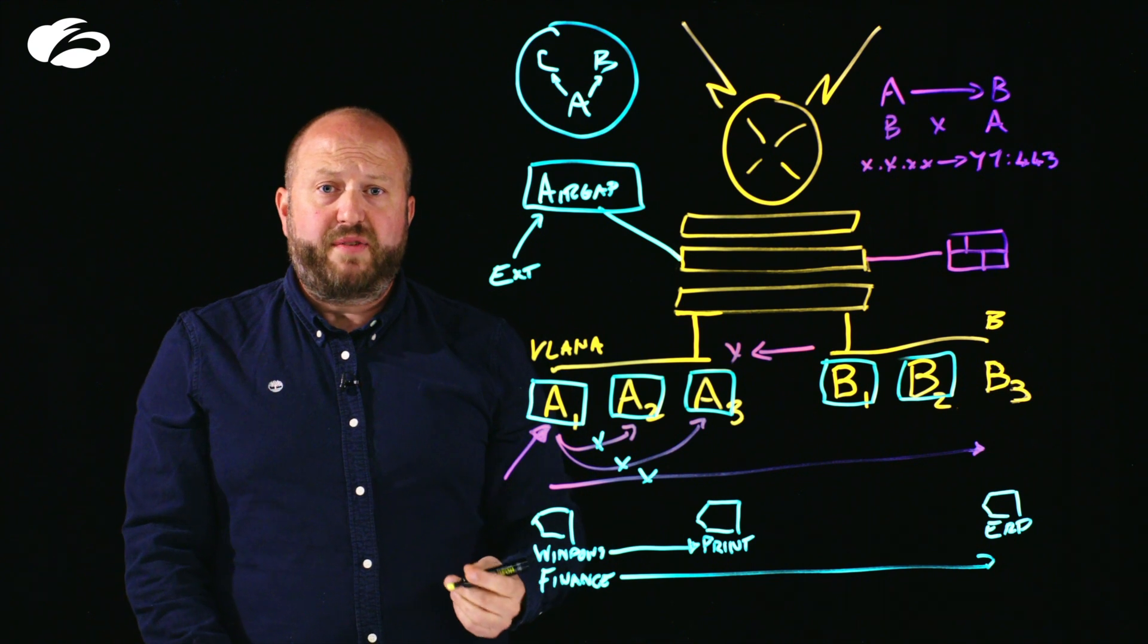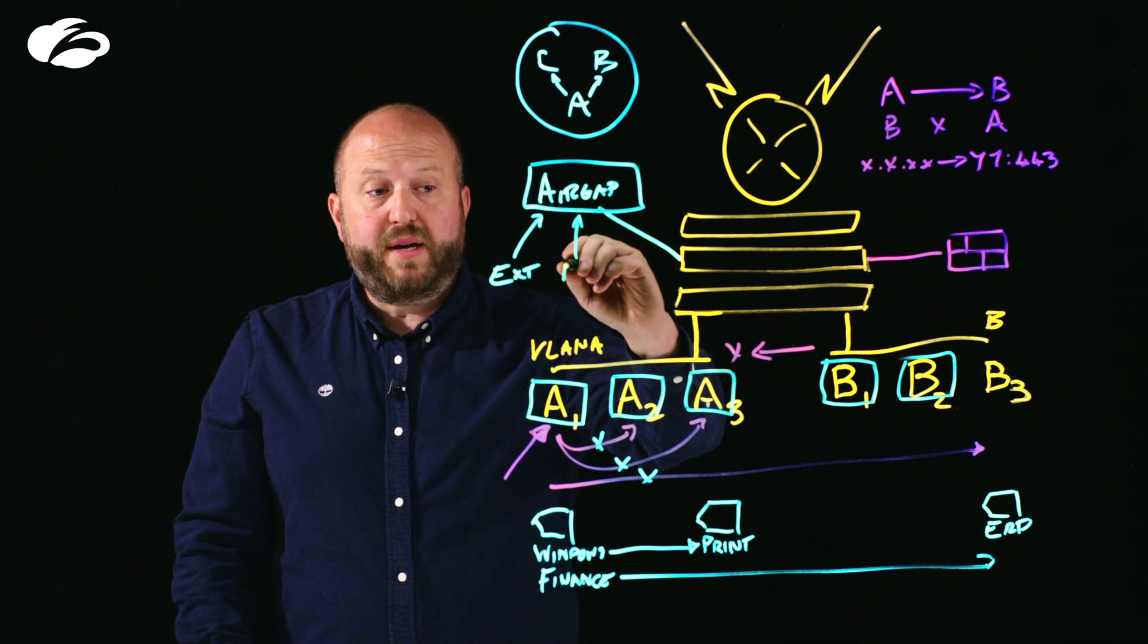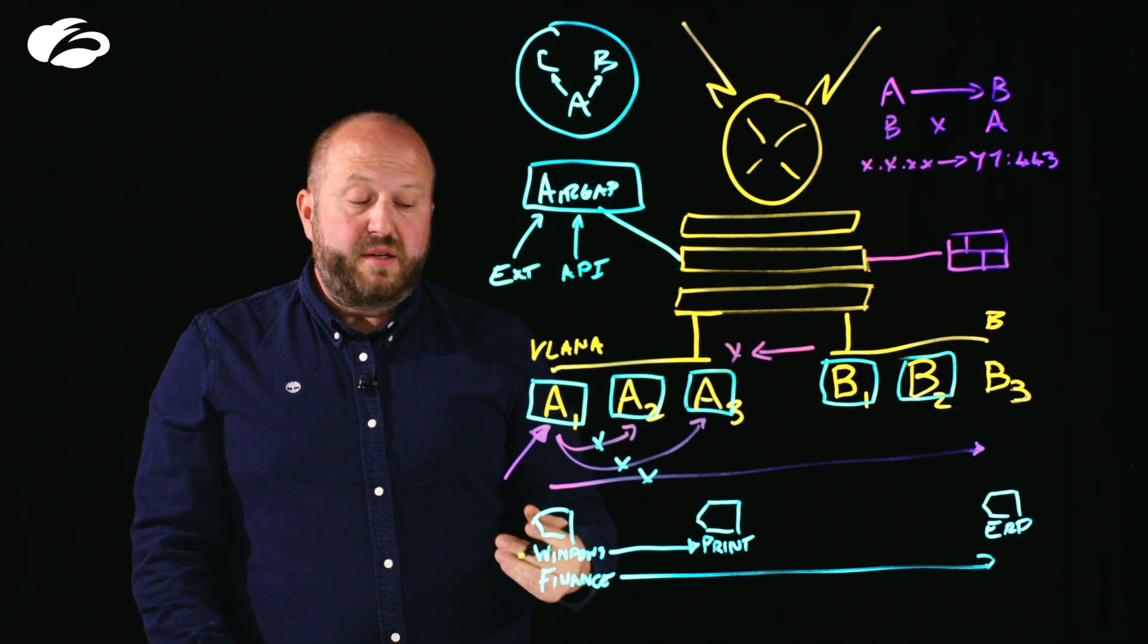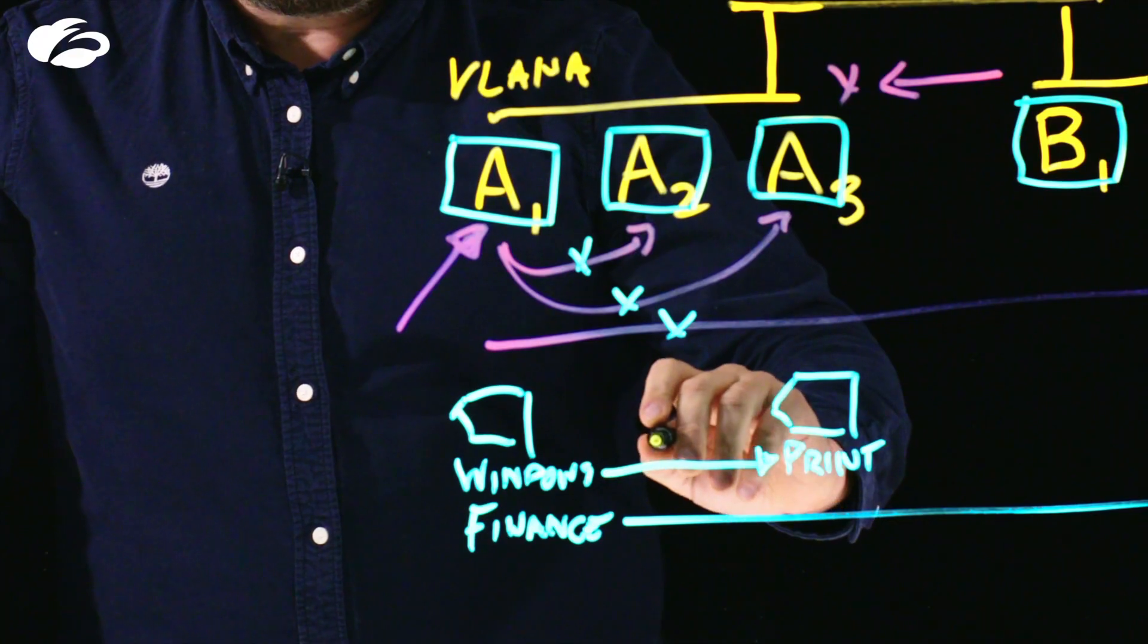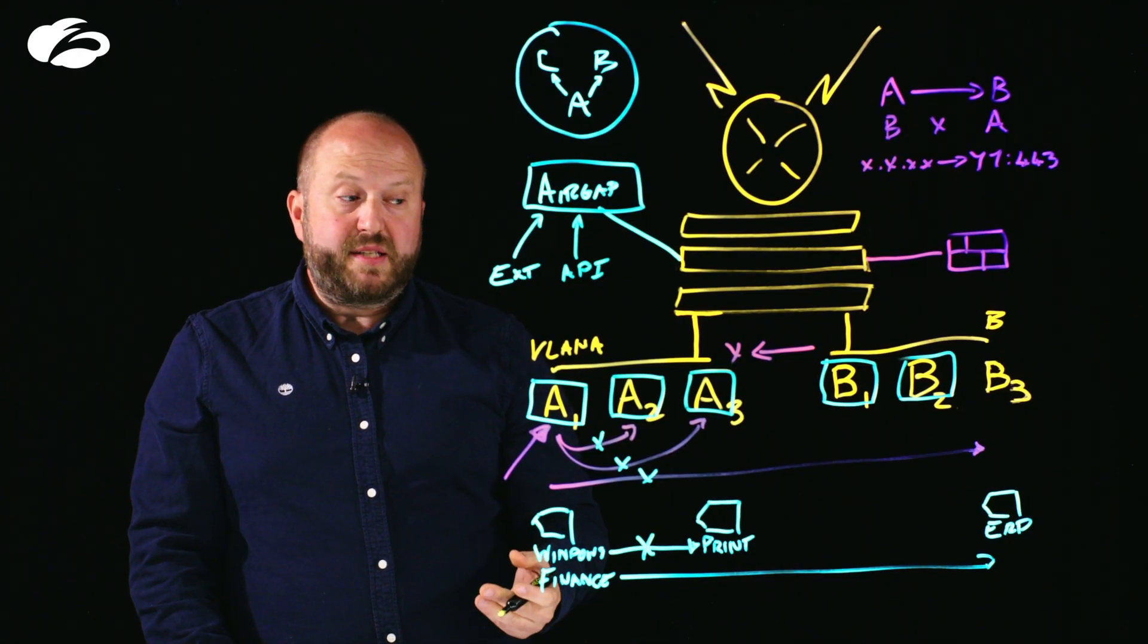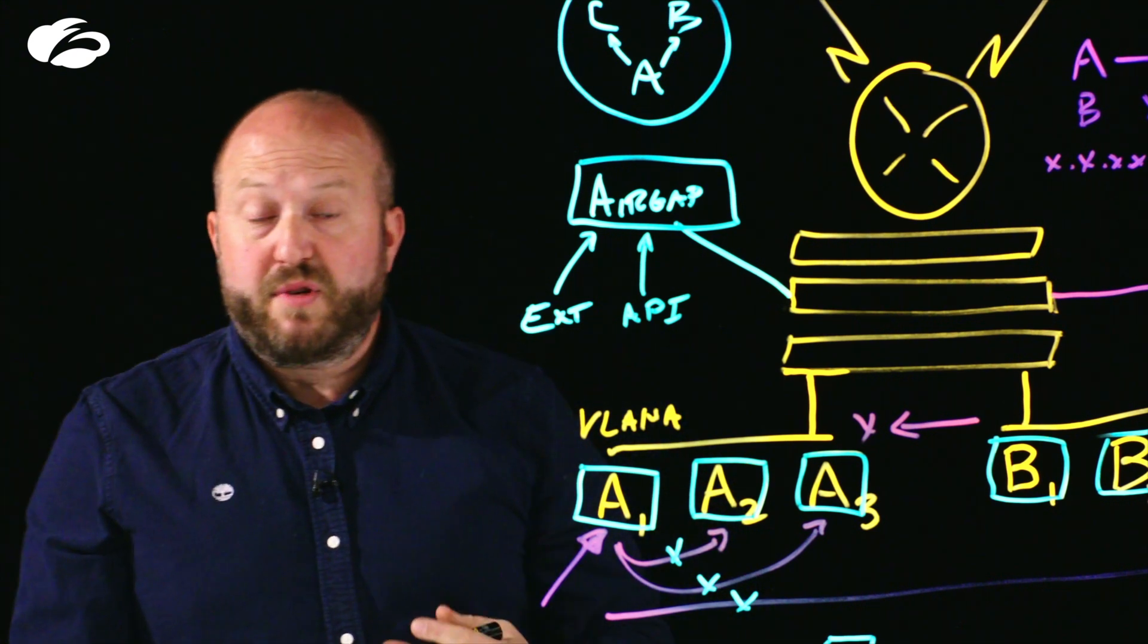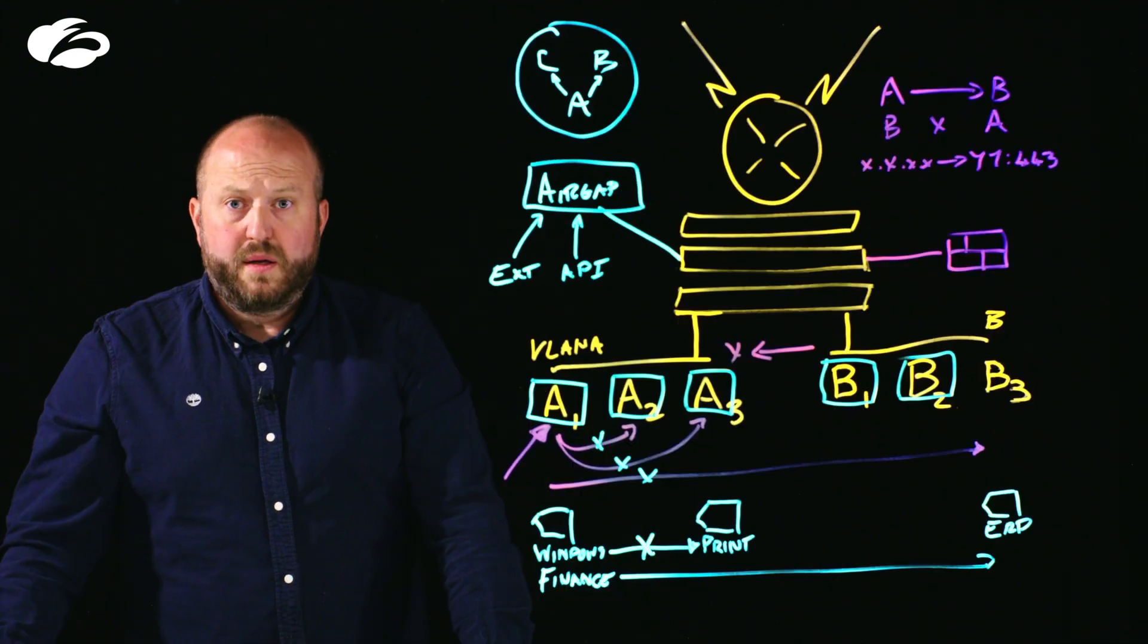But one of the standout features of AirGap is with a simple mouse click or API call, we can actually have multiple policies ready on the platform. If you suffer an incident on your network, you can deploy that instantaneously. For example, cutting off Windows to printers, but enabling those finance users to continue to connect to the ERP system because that's a business critical function, thereby enabling you to respond to an incident without having to kill the entire network.